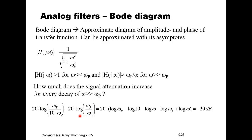Developing the expression further: the logarithms of ω_p and ω cancel, leaving only −log(10) = −1, multiplied by 20 gives −20 dB. This means for every tenfold increase in frequency, the amplitude attenuation increases by 20 dB.